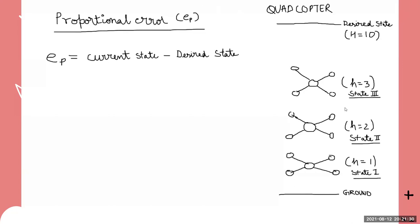So ep for state one is 1 minus 10 equals minus 9, for state two it's 2 minus 10 equals minus 8, and for state three it's 3 minus 10 equals minus 7. These are just three error values — the error at each state. In proportional control, we multiply this by a proportionality constant P and get a total error, and based on that error we move the bot.